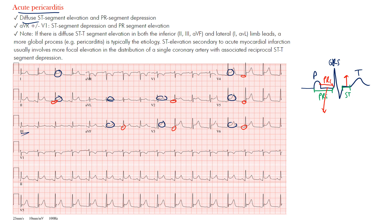You'll also see what we consider reciprocal changes in lead AVR and sometimes in lead V1. Instead of seeing the PR segment depressed, you'll see PR segment elevation and ST segment depression. Looking at AVR here, notice the PR segment is up and the ST segment is down. In V1 you can see the ST segment depression, maybe not so much the PR elevation.